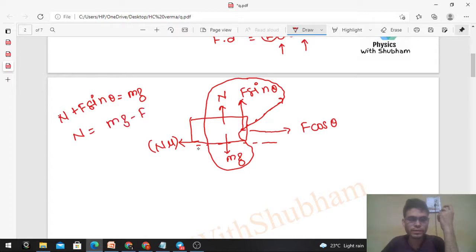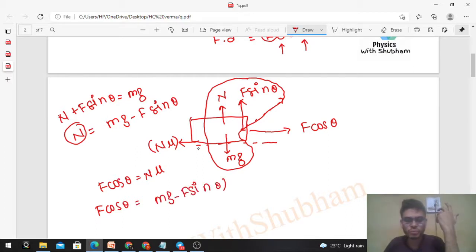In the horizontal direction, F cos θ equals N times μ. From here you can substitute the value of normal to find F. So F cos θ equals mg minus F sin θ times μ.